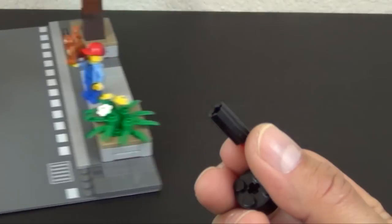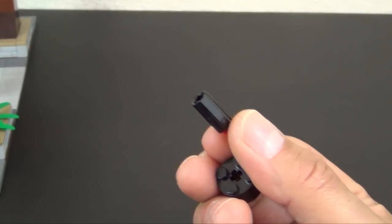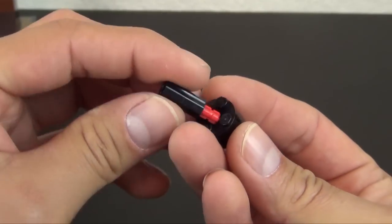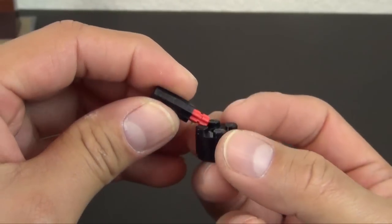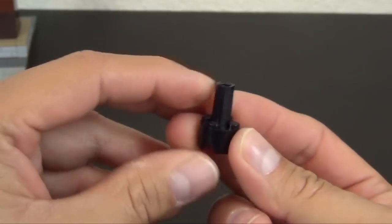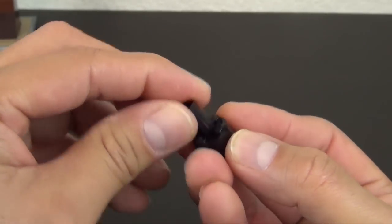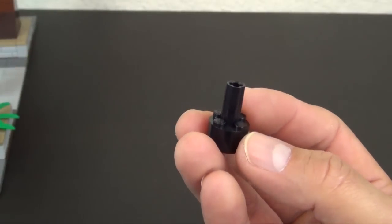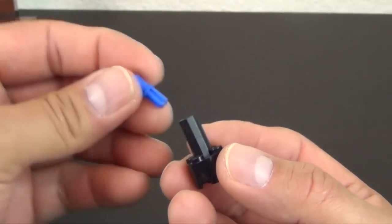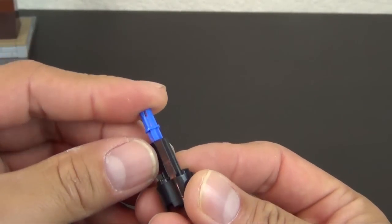What we're going to do is use one of these axle joiner pieces, just a black Technic axle joiner piece. We have a two-long axle we connect in there, so that makes a strong foundation.